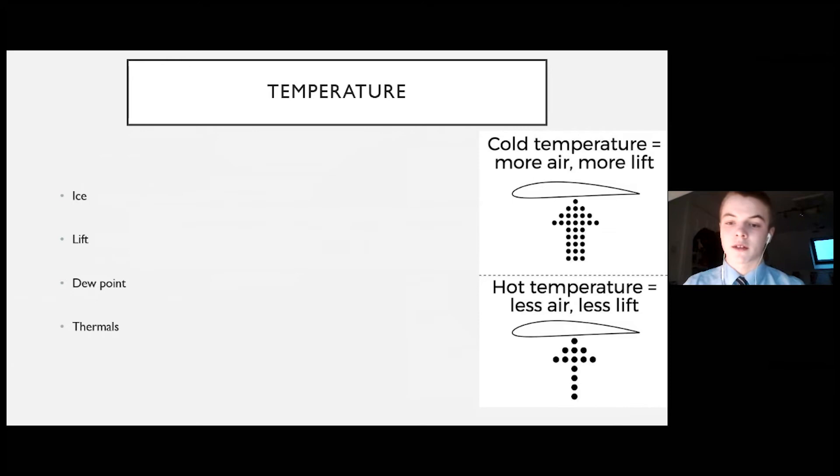Temperature can also be unhelpful in terms of lift. If you look at the diagram on the right, we can see that on a cold day, there is more air, and therefore the air is more dense. So, there's more lift on a wing, as seen in the equation for lift. But when the temperature is higher, there's less air, and it's a lower density, and there's therefore less air to create lift. So, we get less lift.